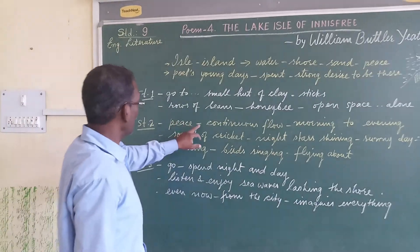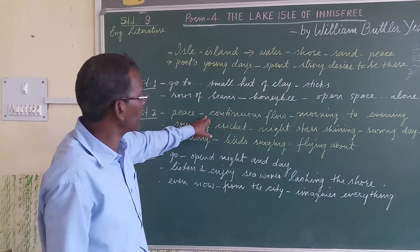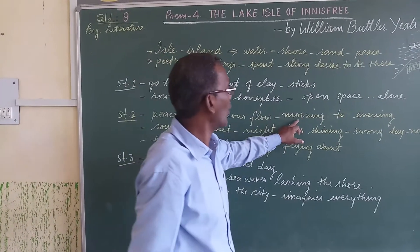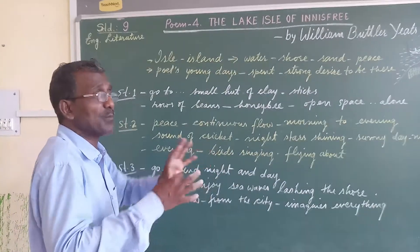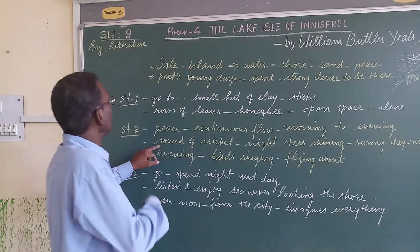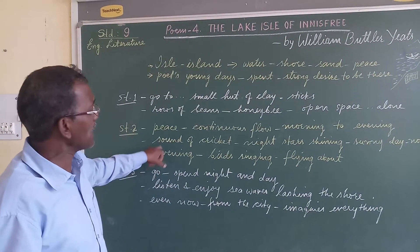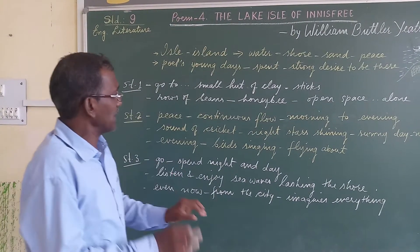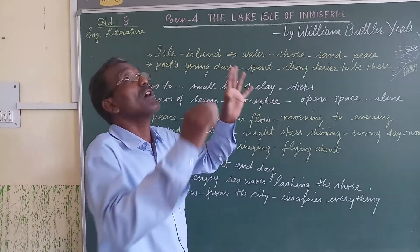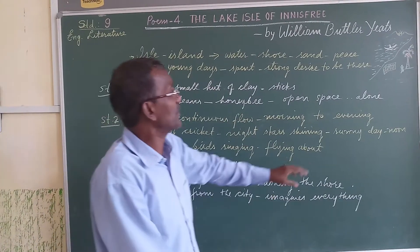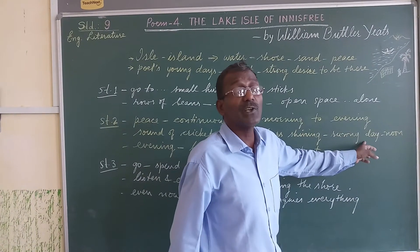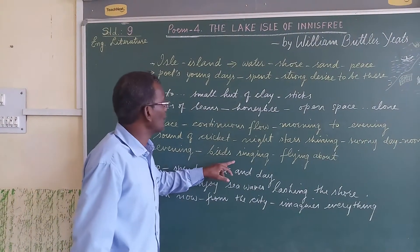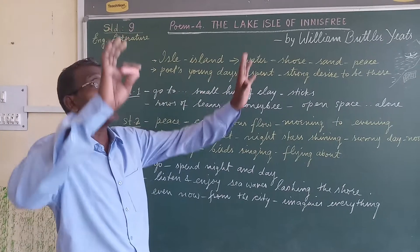The poet says in the second stanza that when he goes there he will experience peace, and that peace comes continuously flowing to him from the surrounding, and that goes on from morning to evening, though during the day some changes in light and atmosphere will be there. He says he will hear in the morning and in the evening the sound of the cricket — an insect that makes a beautiful sound. Then at night he will enjoy the starry night, see the stars shining, see the moon shining, and during day he could see the sunny day, the purple sun. In the evening again he would enjoy the singing of the birds and the sight of birds flying around him.